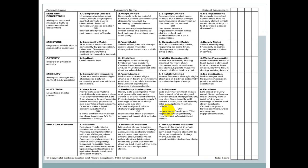The six subscales of the Braden Scale are: sensory perception (scored 1–4), moisture (1–4), activity (1–4), mobility (1–4), nutrition (1–4), and friction and shear. Each subscale is numbered 1 to 4, and the total score across all six parts is used for risk assessment.